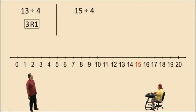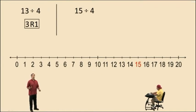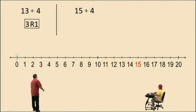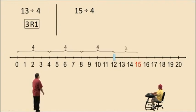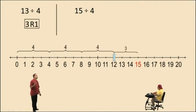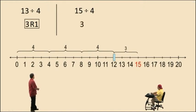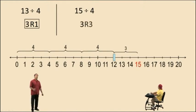Let's try another one: 15 divided by 4. How many 4's go into 15? Well, there's one 4, there's 2 4's, there's 3 4's. And notice we have 3 remaining units. So how many whole 4's go into 15? 3 of them, with a remainder of 3 units.